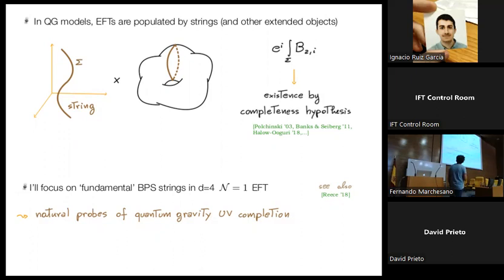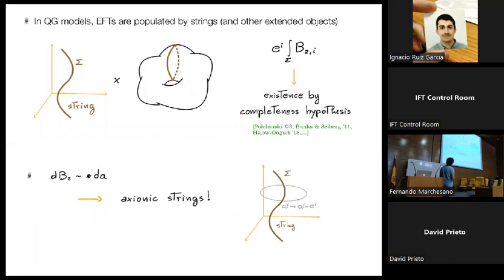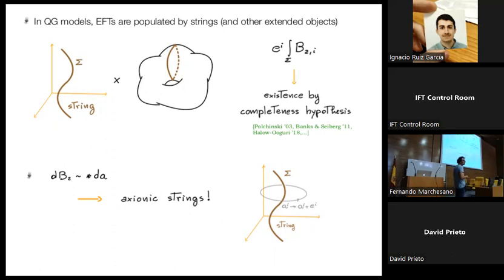I will focus on what are called fundamental strings, which are basically strings that cannot be resolved into some smooth solitonic object within a four-dimensional effective field theory. Such strings appear as natural probes of the UV completion of the four-dimensional EFT. One can introduce strings as electrically charged objects and get a magnetically dual description by dualizing these two-form potentials into corresponding axions. Around the strings, the axions undergo some integral non-vanishing shift set by the charges of the string.